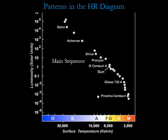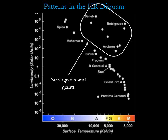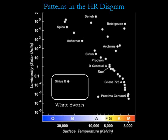Stars do not fall randomly throughout an HR diagram, but cluster into four major groups. Most stars fall somewhere along the main sequence, the streak that runs from the upper left to the lower right of the HR diagram. Our sun is a main sequence star. The stars in the upper right are called supergiants because they are very large in addition to being very bright. Just below the supergiants are the giants, which are somewhat smaller in size and lower in luminosity, but still much larger and brighter than the main sequence stars. The stars near the lower left are small in size and pure white in color because of their high temperatures. These stars are called white dwarfs.